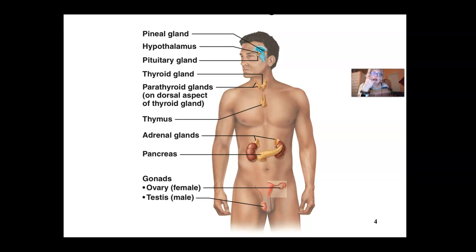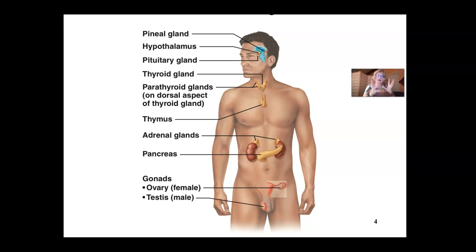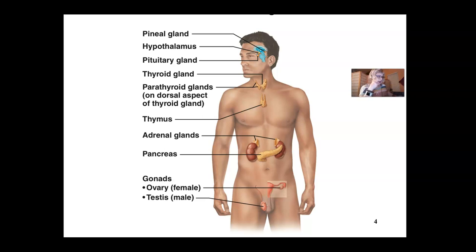For example, adrenocorticotropin releasing hormone from the hypothalamus tells the anterior pituitary to release ACTH (adrenocorticotropic hormone). That hormone goes into the bloodstream and hits the adrenal gland, where ACTH reaches the cortex and the adrenal gland releases specific mineralocorticoids — specifically cortisol, which deals with chronic stress. The hypothalamus is like a thermostat detecting and auto-regulating the body.